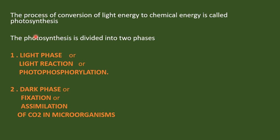Photosynthesis is going to have two phases. The first phase is called the light phase and the second one is called the dark phase. The light phase is also going to be called as light reaction or photophosphorylation.